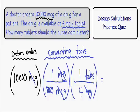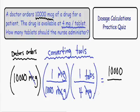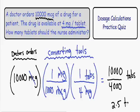To finish this problem, we multiply all the numbers in the numerator and all the numbers in the denominator. In the numerator: 10,000 × 1 × 1 = 10,000. In the denominator: 1,000 × 4 = 4,000. Our remaining unit is tablets, so we have 10,000 divided by 4,000 tablets. Simplifying, 10,000 ÷ 4,000 = 2.5. So our final answer is 2.5 tablets.